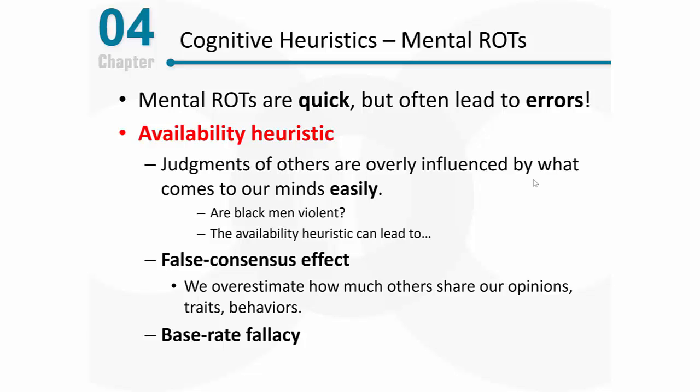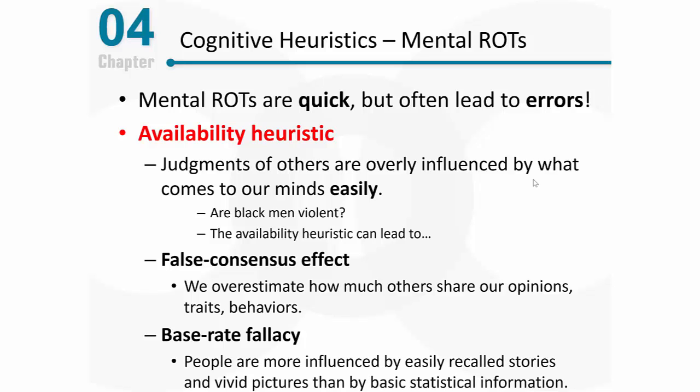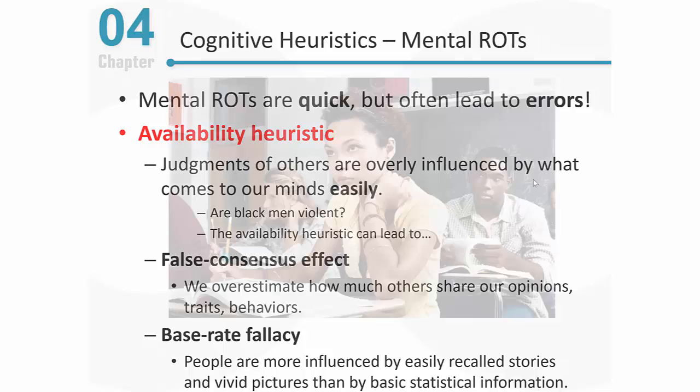Another thing that the availability heuristic leads to is a base rate fallacy. The base rate fallacy states that people are more influenced by very easily recalled stories — what we would call anecdotal information — and vivid pictures, than by basic statistical factual information, and that can really be a problem. For example, let's say that you are seeing lots of videos of young men throwing rocks at protests, or seeing a lot of information about black men being incarcerated in our society. Those stories can very much influence you above and beyond basic statistical information.